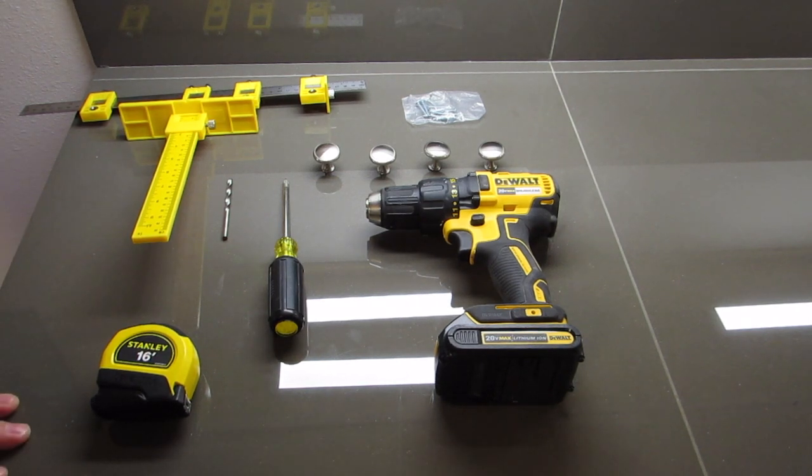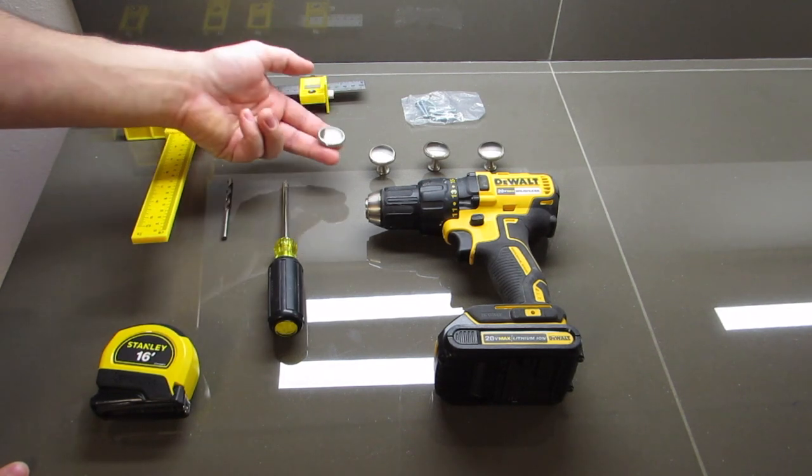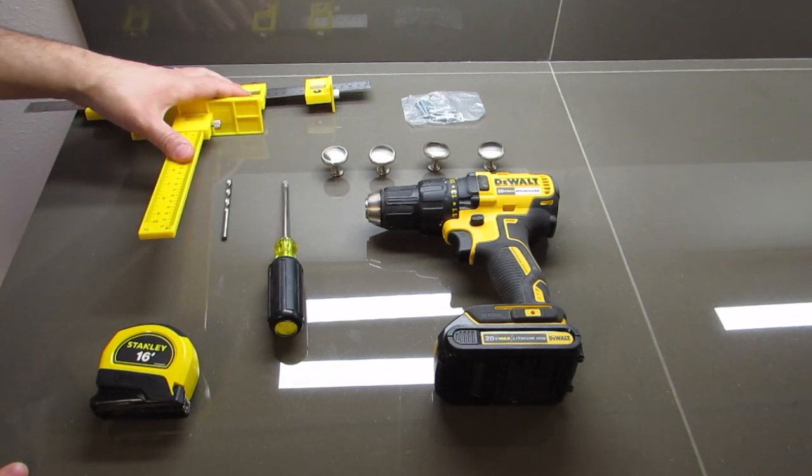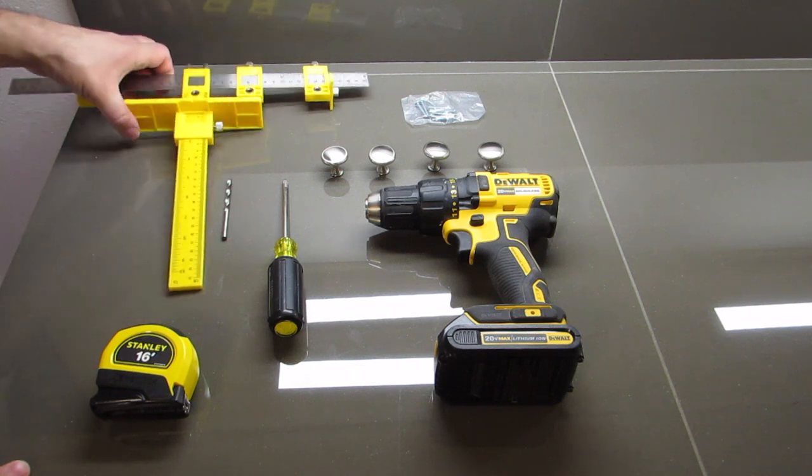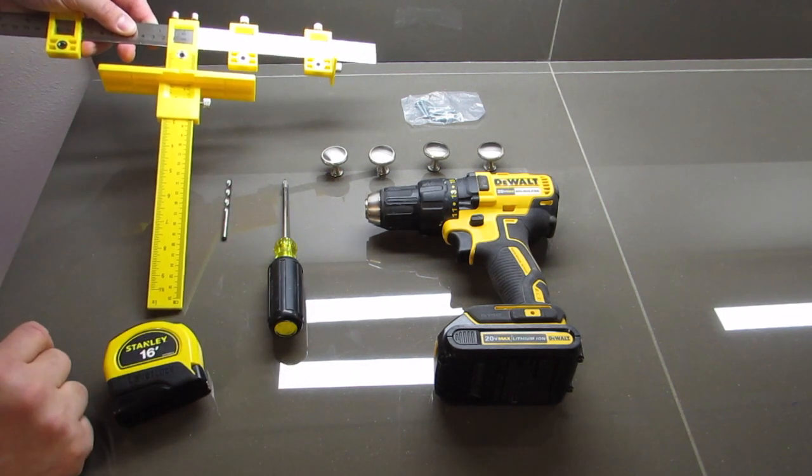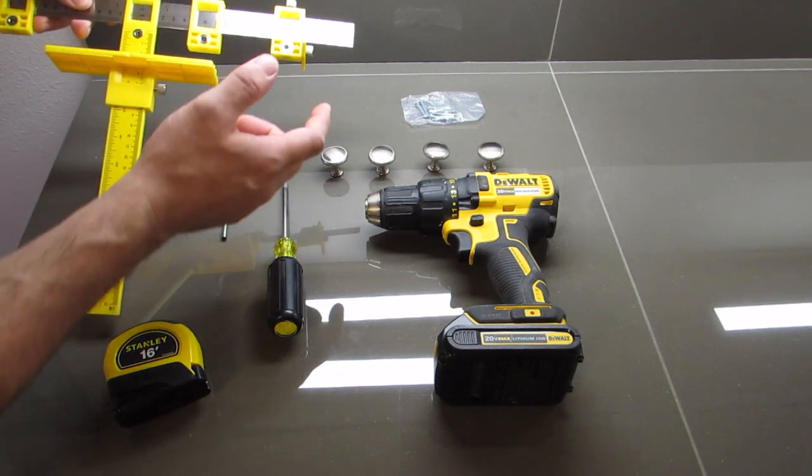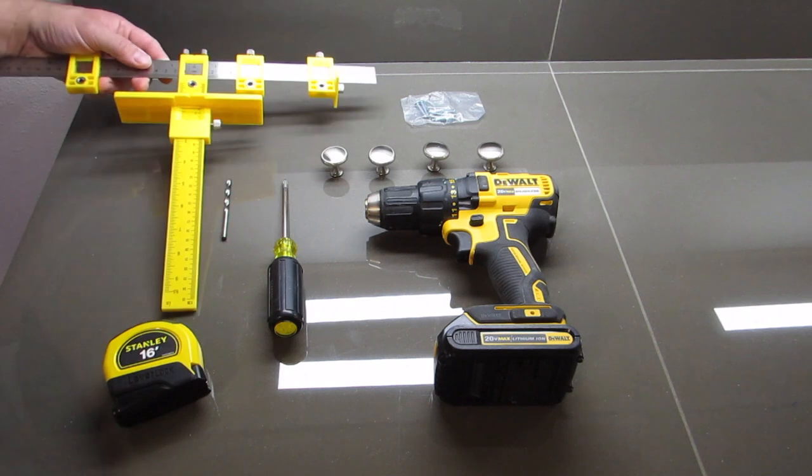So now we're going to take a look at the tools that I'm using. For starters we obviously have the knobs. In this application I'll be using knobs but this jig will work for a handle as well if you wanted to use a handle because it looks like it has four holes here.